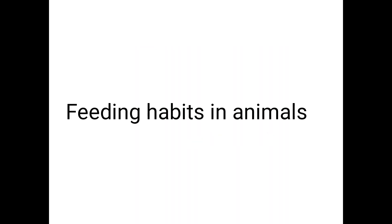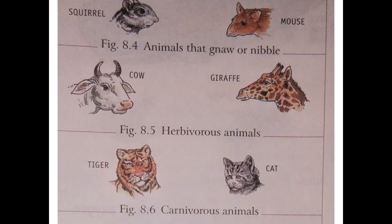Next we will discuss feeding habits in animals. Animals need food to grow, to get energy, and to stay healthy. Different animals eat different foods, and depending upon the food type, their mouth parts are designed accordingly. In the case of rodents like squirrels and mice, they have small and sharp front teeth to gnaw their food — they nibble fruits and seeds.